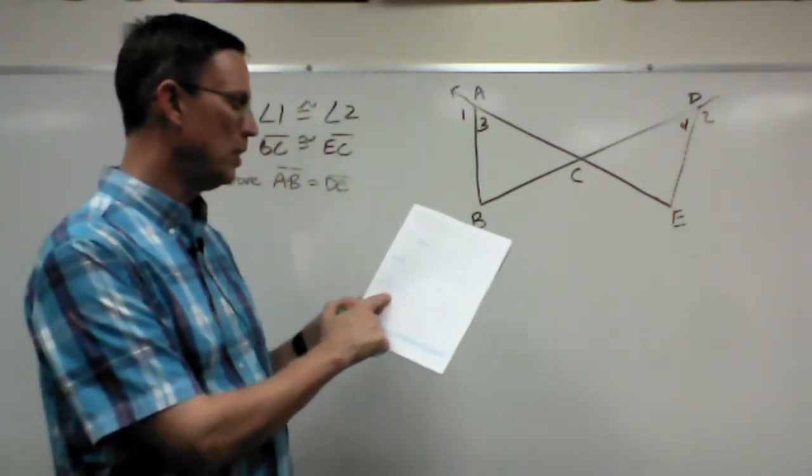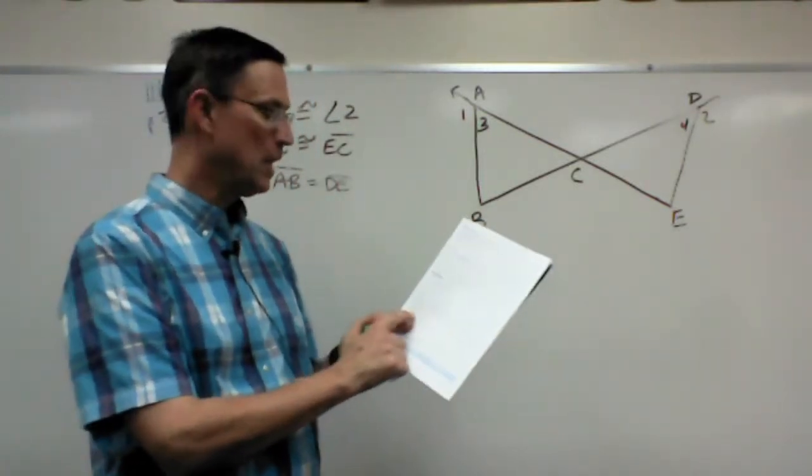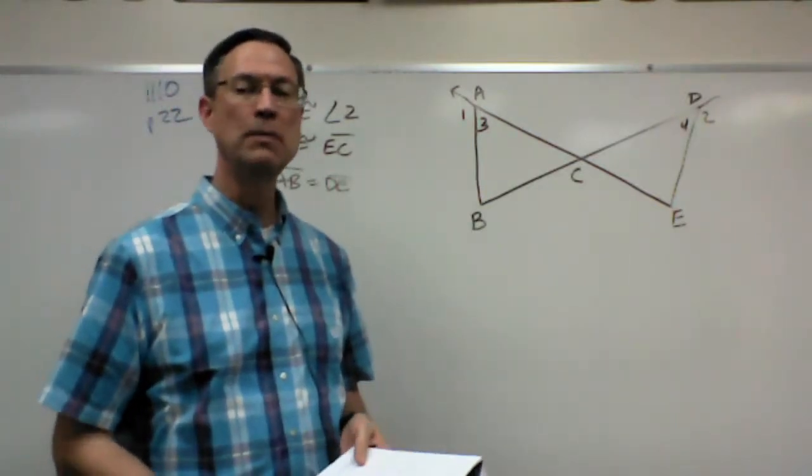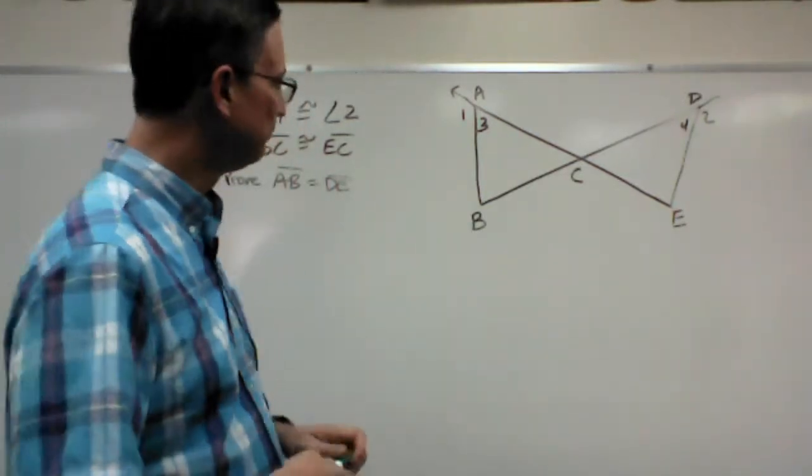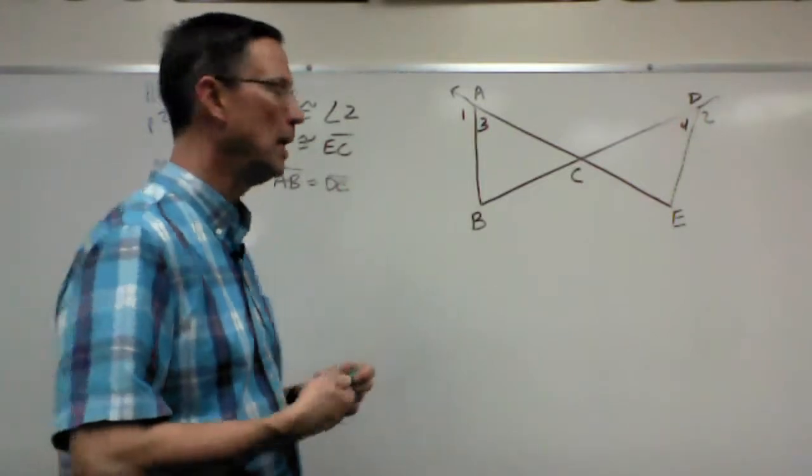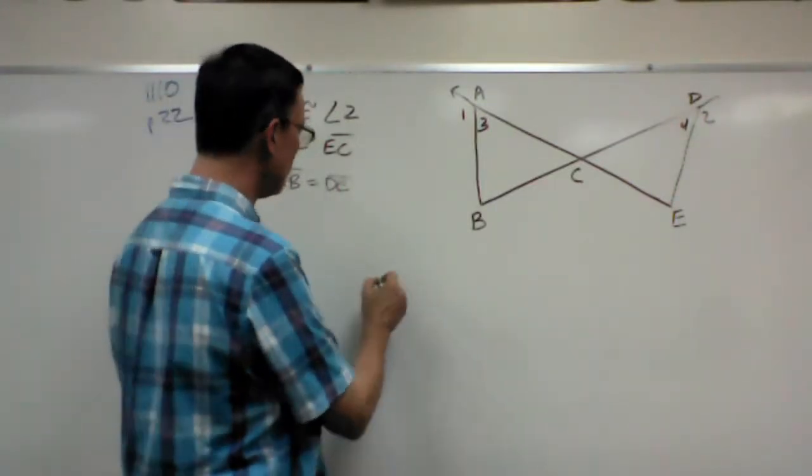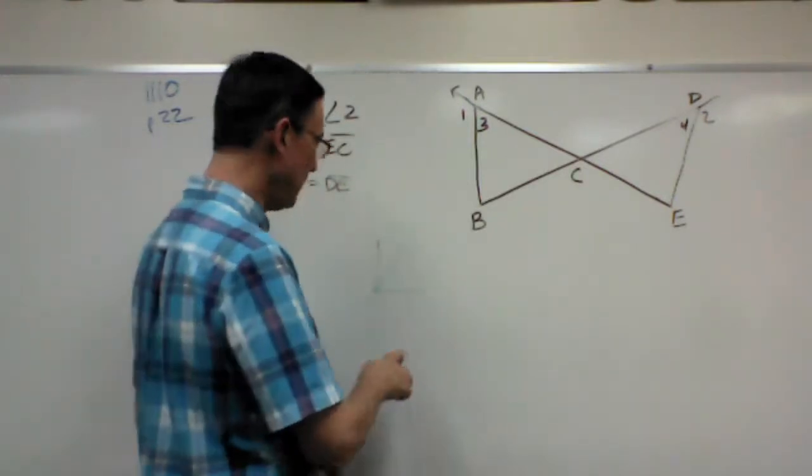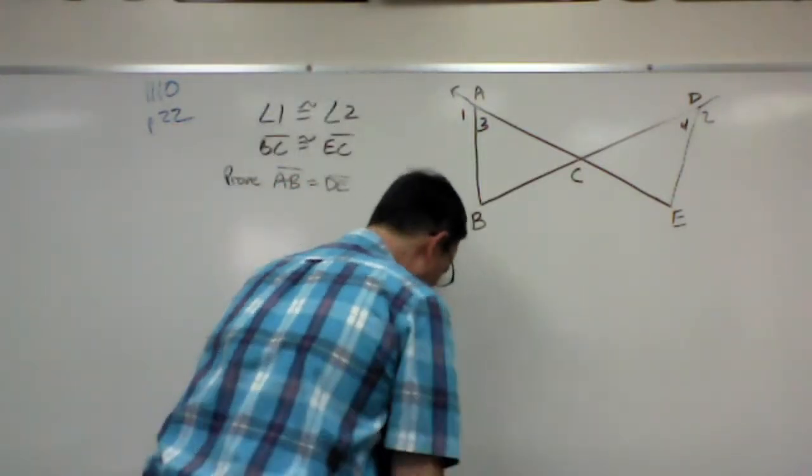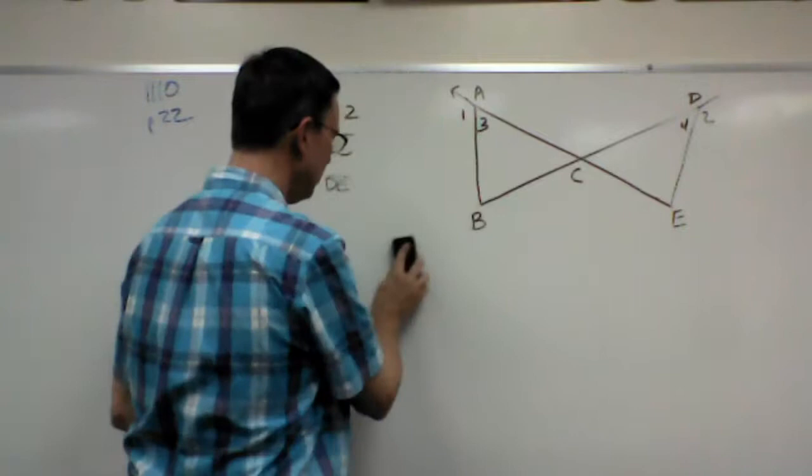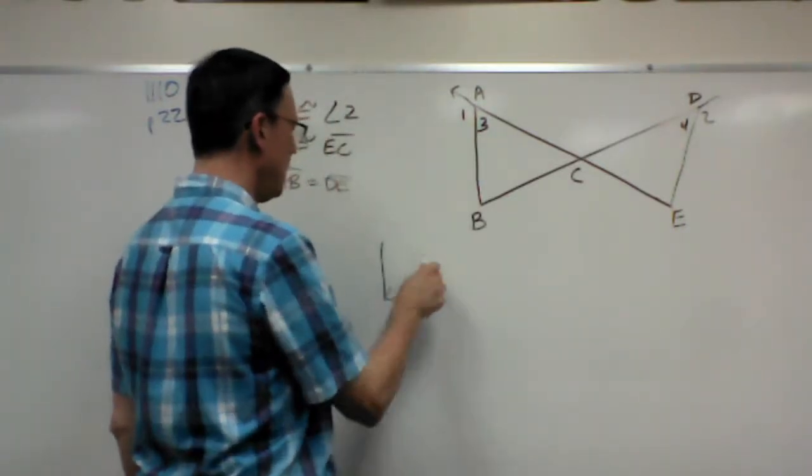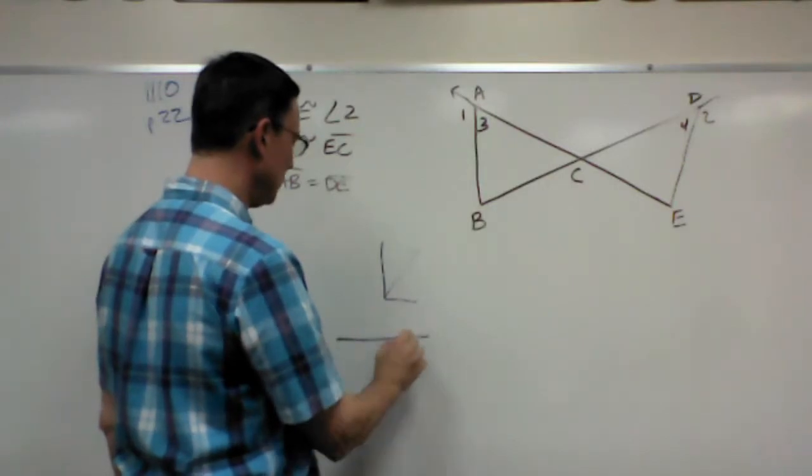And so we would say that angle 1 and angle 3 are supplementary, angle 2 and angle 4 are supplementary. Remember what supplementary means? If two angles come together, let me just illustrate this real quick. If two angles come together and form a right angle, we say they're complementary.